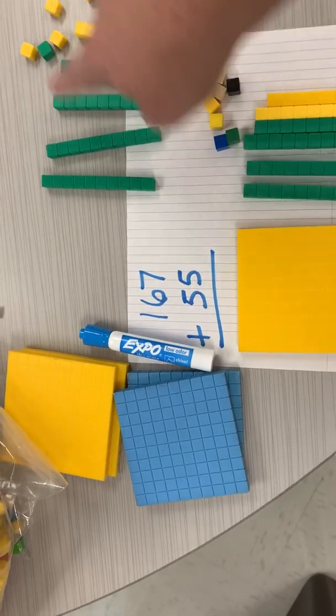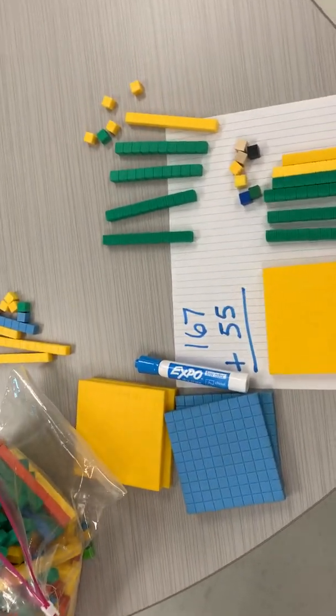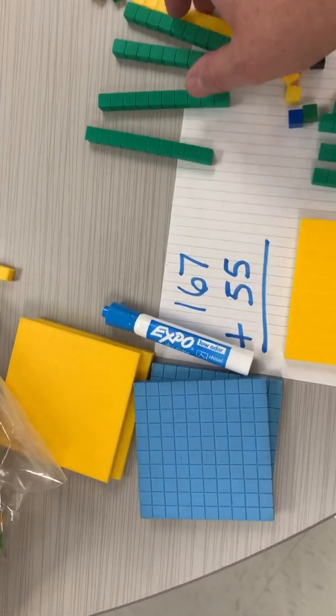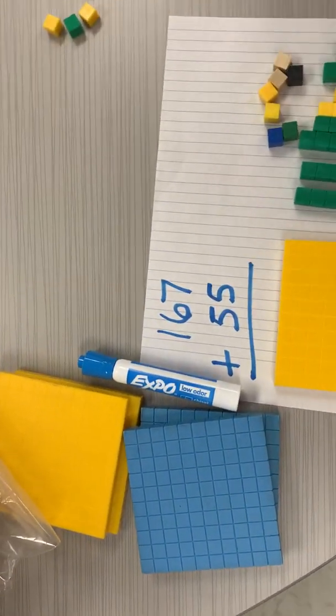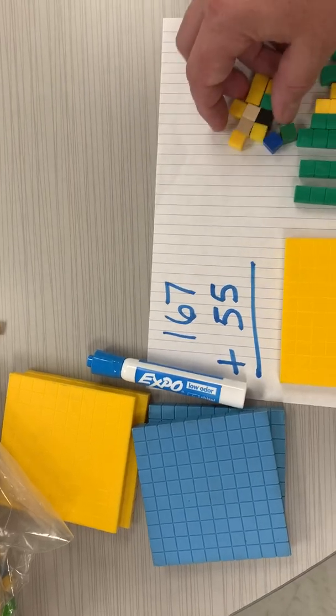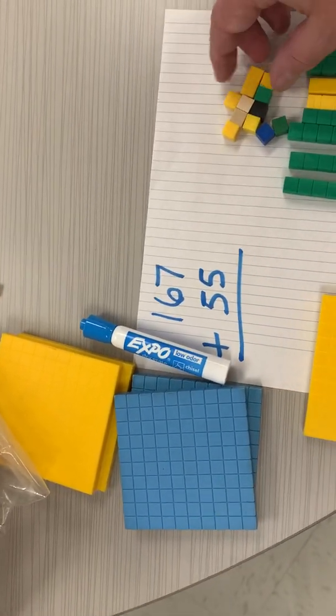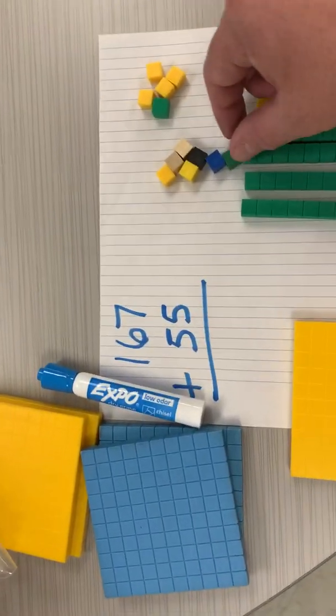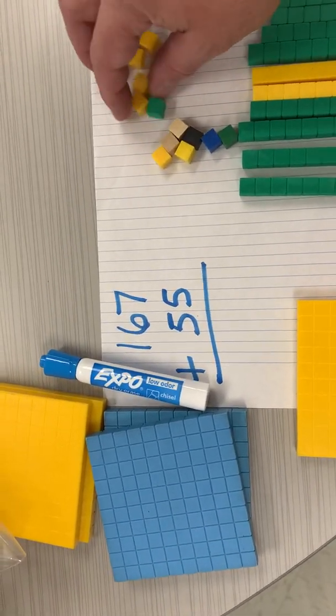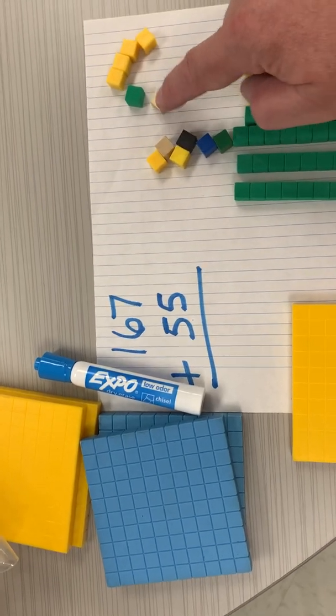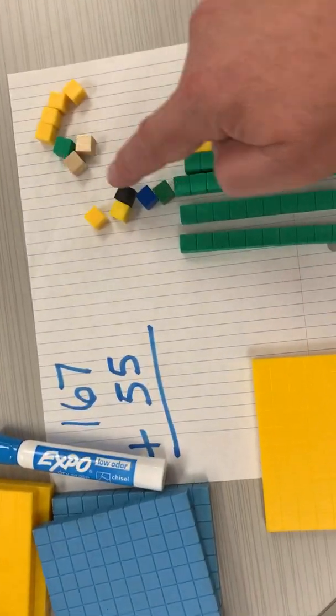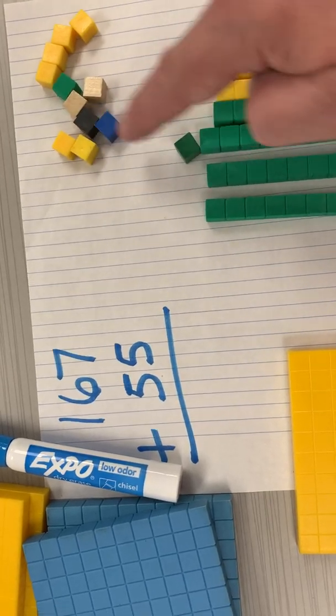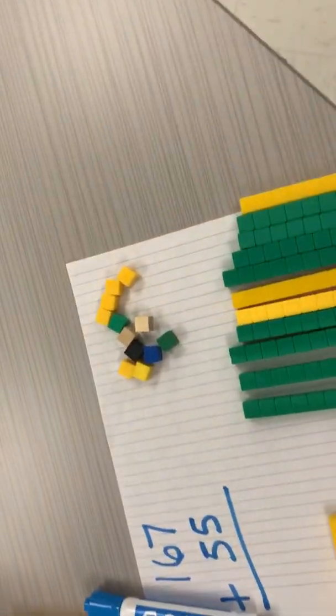Now if I want to add these together, this is what I have to do. I would combine them all together. Okay, but let's see how many we have. So in the ones place we have 5 right here. We have 5, 6, 7, 8, 9, 10, 11, 12. I have 12 in the ones place.